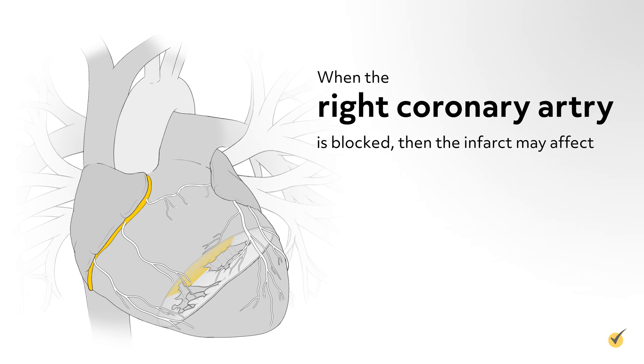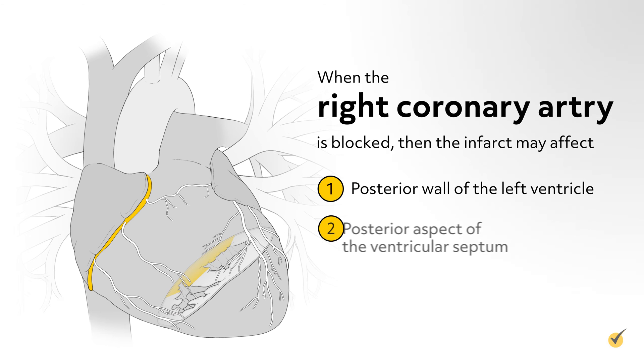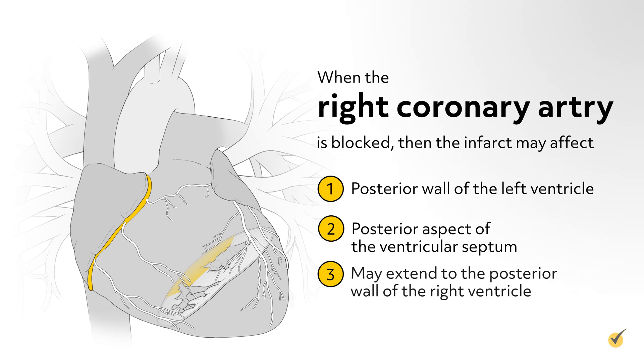When the right coronary artery is blocked, the infarct may involve the posterior wall of the left ventricle, the posterior aspect of the ventricular septum, and may extend to the posterior wall of the right ventricle.